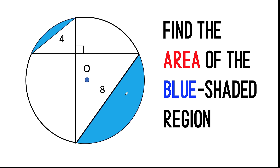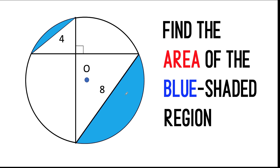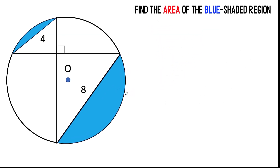You can pause the video and see if you can solve this geometry problem. Now let's solve this problem together. Let's begin by connecting this point here, passing through the center to the other side of the circle — in other words, we constructed a diameter — and let's label this diameter as diameter AB.